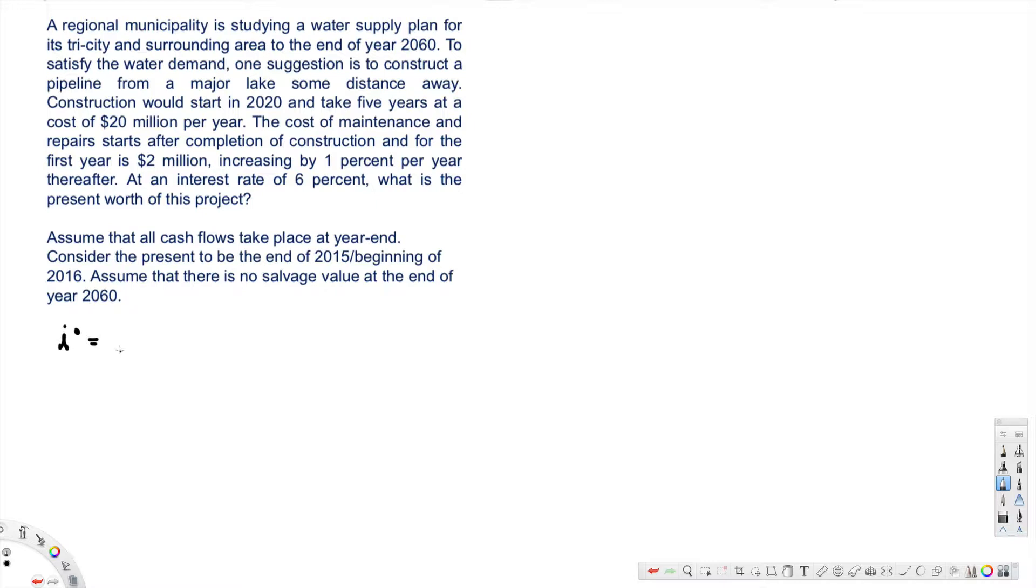i prime equals (1 plus i) divided by (1 plus g) minus 1, and 1 plus i is 6%, so this is 1.06 divided by 1 plus g, g is 0.01, minus 1, and that gives us 0.0495.